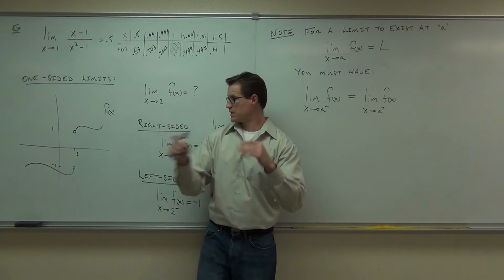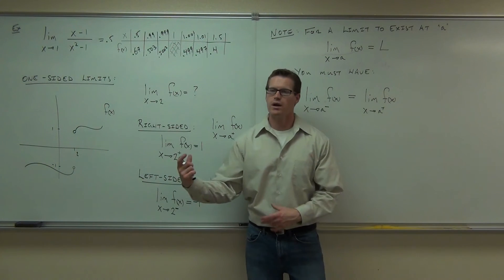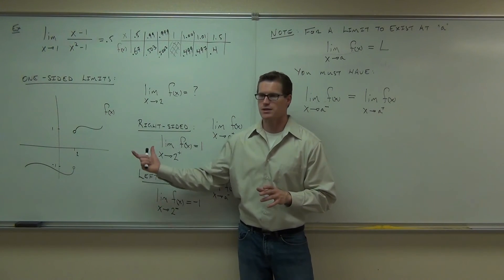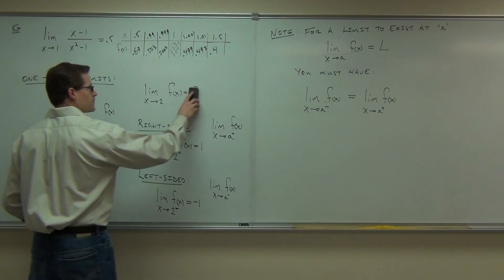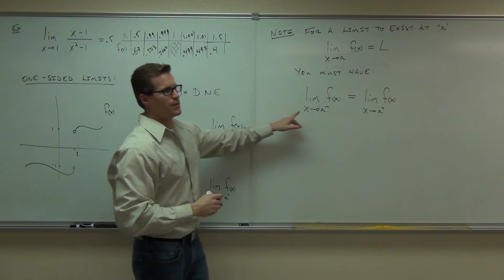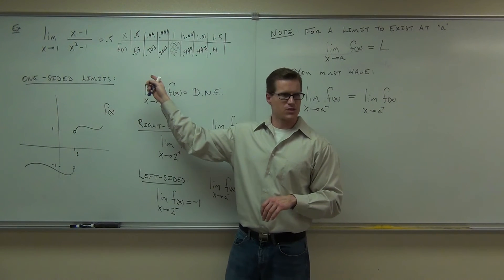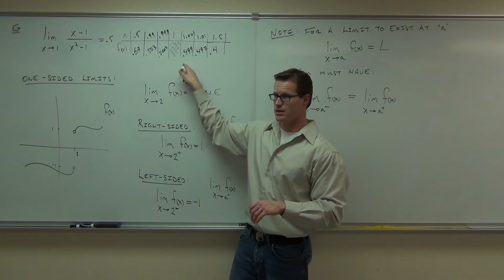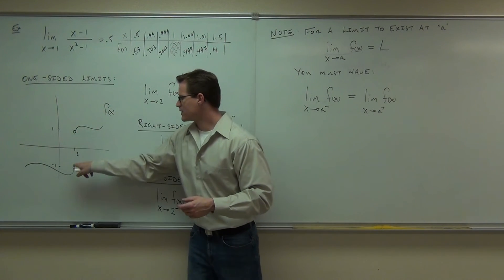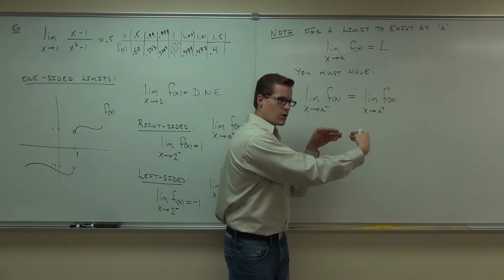Do those lines meet up? Do they come to the same point, the same value, the same height? Well, let's see — the right-sided limit was 1, the left-sided limit was negative 1. Is 1 the same as negative 1? No. So both one-sided limits don't have the same value — you'd say this limit does not exist. The limit as x approaches 2 of f of x does not exist. Compare this to the earlier example: both sides were approaching 0.5, so the limit existed. You have to have the same function value on both the left and the right.